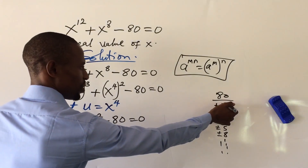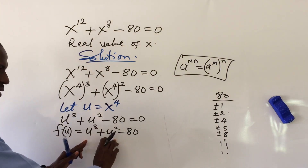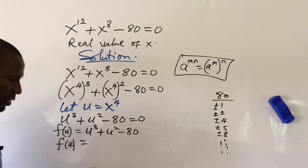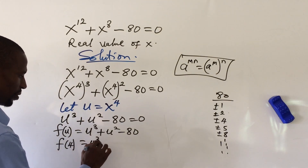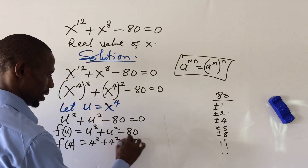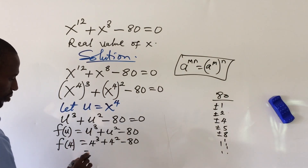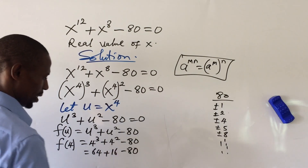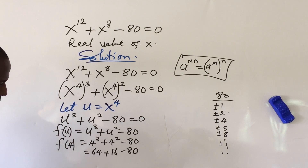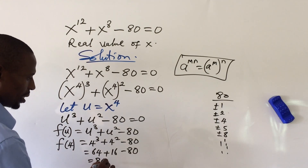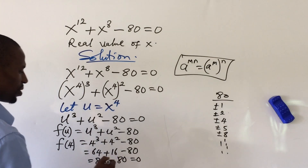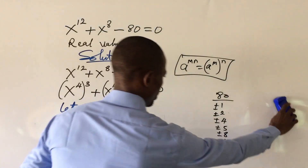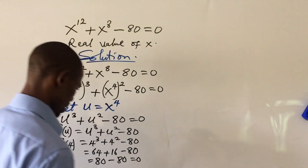If we substitute these values, we'll discover that f(4) equals zero. Let's verify: 4 cubed plus 4 squared minus 80 gives us 64 plus 16 minus 80. That's 80 minus 80, which equals zero. So f(4) = 0, confirming that u = 4 is the first root.